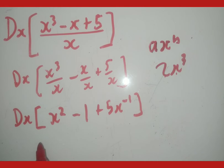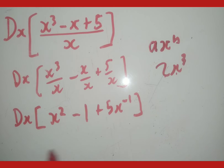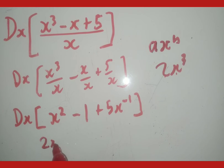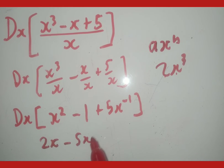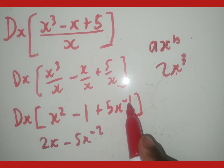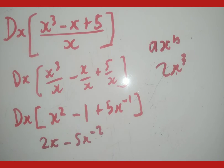Now that everything is in a differentiable form, I can derive. Notice that now I do not include dx or the brackets. So let's derive: this becomes 2x. The constant disappears. This one becomes minus 5x to the power of minus 2, because it's going to be negative 1 minus 1, which is minus 2. So that is the derivative.